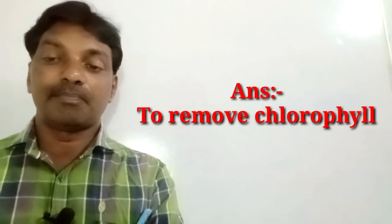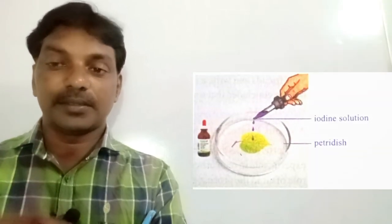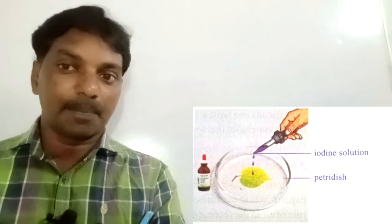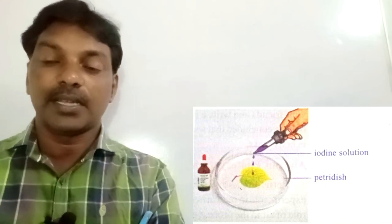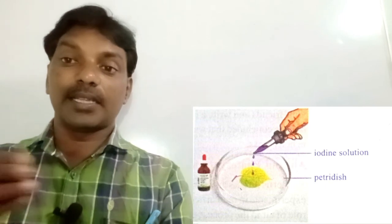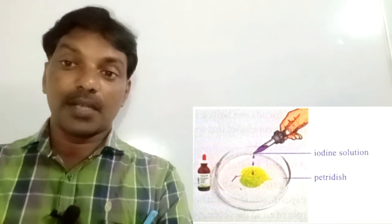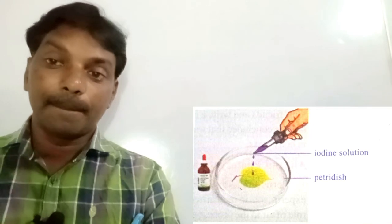When you boil the leaves in methylated spirit, the chlorophyll is removed while the starch remains in the leaf. After boiling, remove the leaves from the test tube and wash them in the petri dish with fresh water.